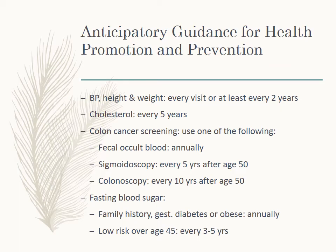Blood pressure, height, and weight need to be obtained every visit or at least every two years. She needs to have her cholesterol checked every five years. Colon cancer screening begins at the age of 50 — fecal occult blood can be done annually, but sigmoidoscopy or colonoscopy is done every five or every ten years, whichever is performed. The prep for a colonoscopy is difficult and not fun — I won't lie about that.